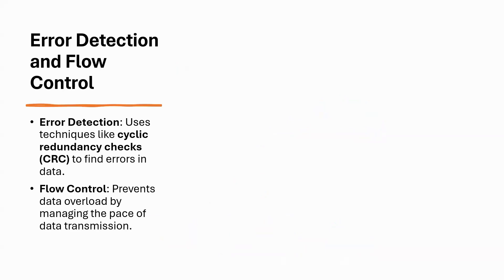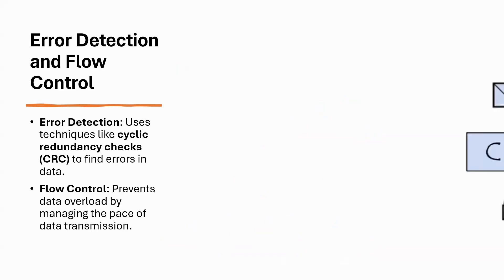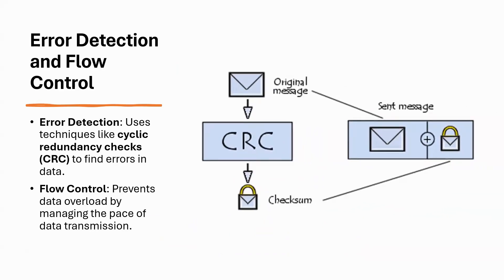Another critical function of the Data Link Layer is error detection. This layer checks the data for errors as it is transmitted. If an error is found, the data is either corrected or retransmitted. The key points here are error detection, which is a technique like CRC — Cyclic Redundancy Check — to find errors in data, and flow control, which prevents data overload by managing the pace of data transmission.